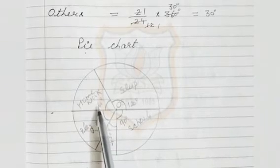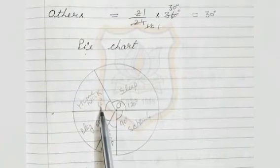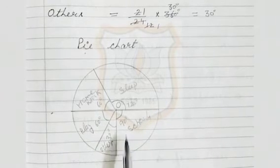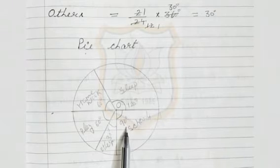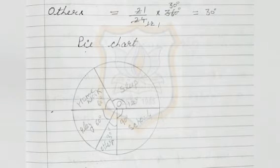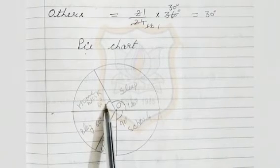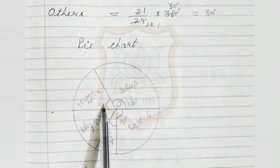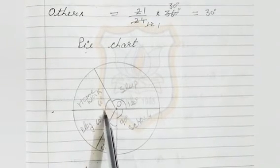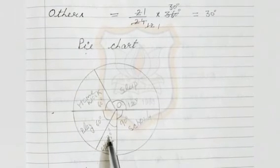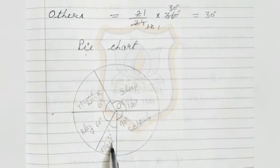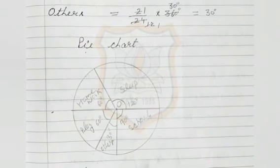The angle of the sector for school is 90 degrees. Next, draw the angle of the sector for homework as 60 degrees — you can see it here. The angle of the sector for play is also 60 degrees. The angle of the sector for others is 30 degrees. So students, your pie chart is ready.